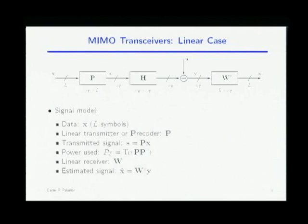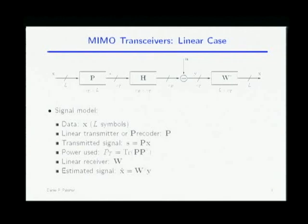The goal is to design P and W — the transmitter and the receiver — to make the estimation as close as possible to the transmitted vector. Something important: the power used at the transmitter is given by the trace of P times P-Hermitian. The symbols X are normalized to one and uncorrelated, so P takes all the power.